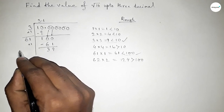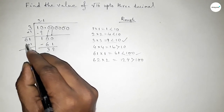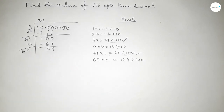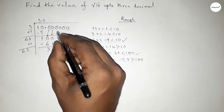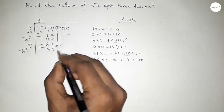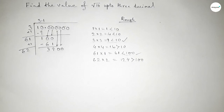Now subtracting: 100 minus 61 equals 39. The last digit is 1, so adding 1: 6 plus 1 gives us 62. Now bringing down the next pair of zeros.